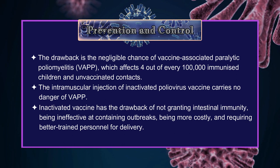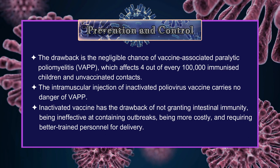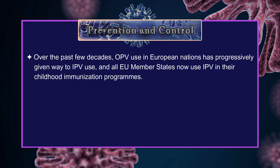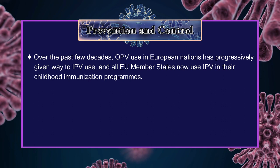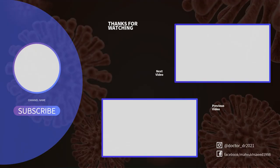The inactivated polio virus vaccine, given by intramuscular injection, carries no danger of vaccine-associated paralytic poliomyelitis. Inactivated vaccines have the drawback of not creating intestinal immunity, being ineffective at containing outbreaks, being more costly, and requiring better-trained personnel for delivery. Over the past few decades, oral polio vaccine use in European nations has progressively given way to inactivated polio vaccine use, and all EU member states now use inactivated polio vaccine in their childhood immunization programs. So, that's it for today. Thank you so much for watching till the end.